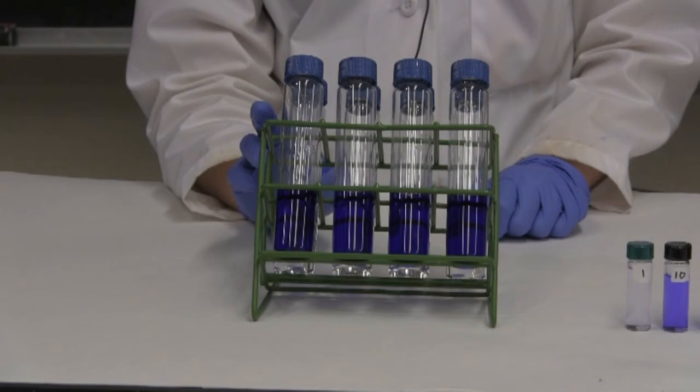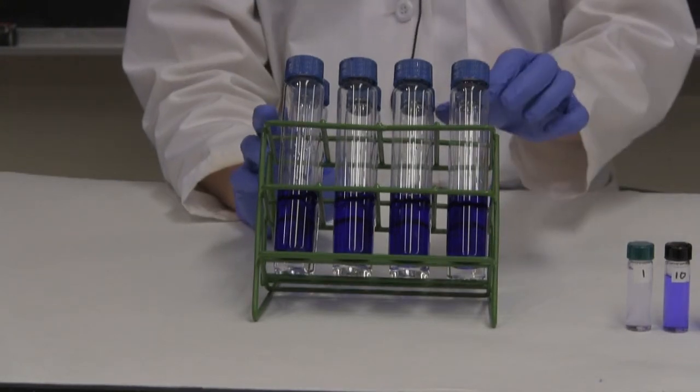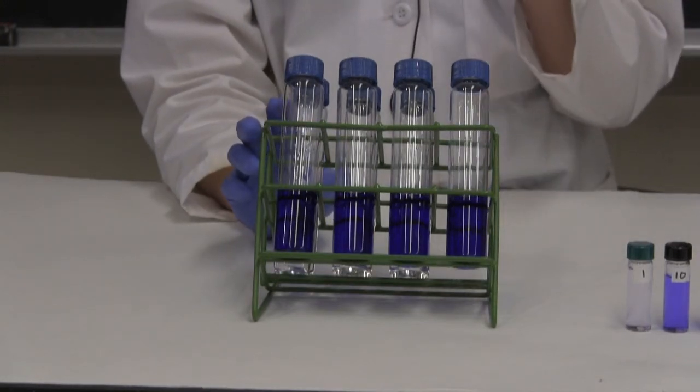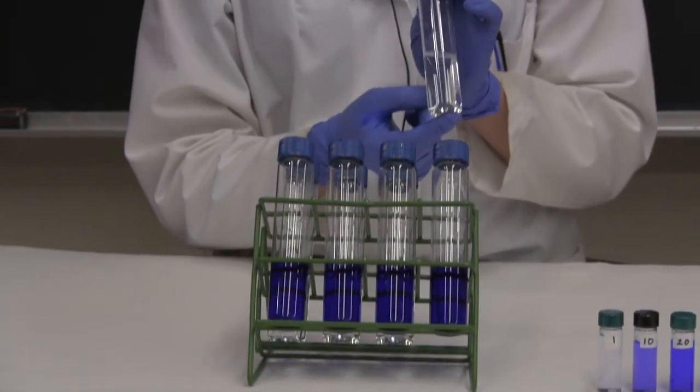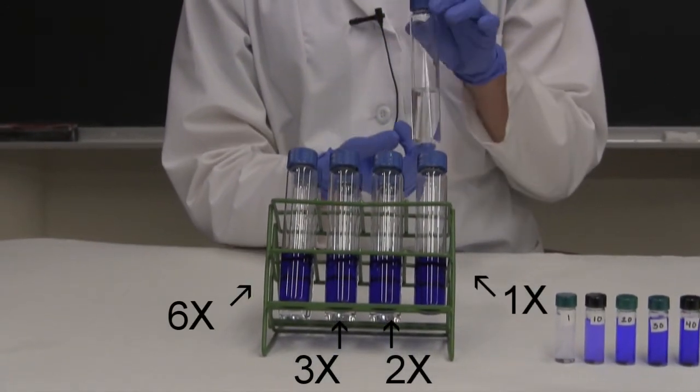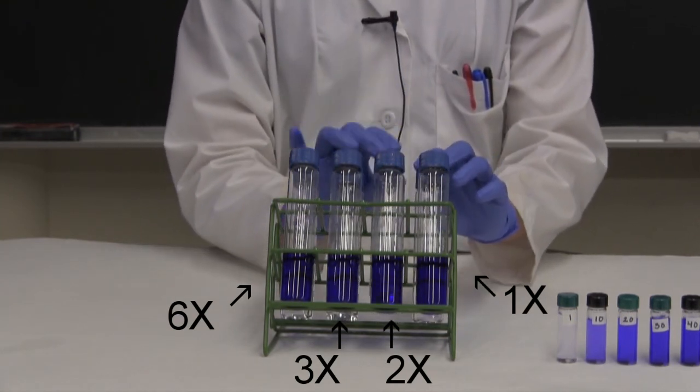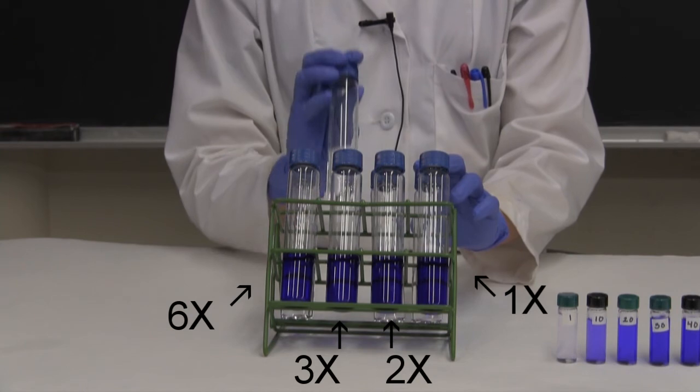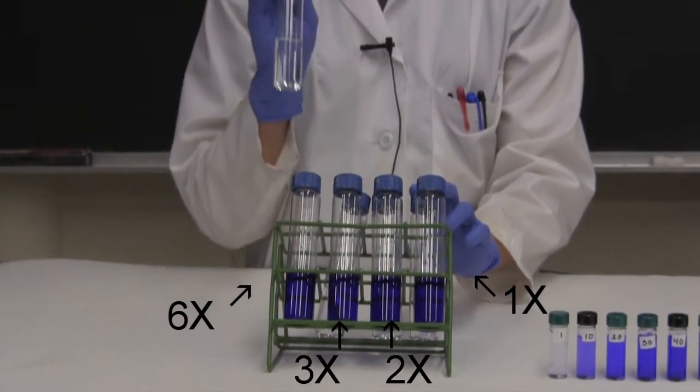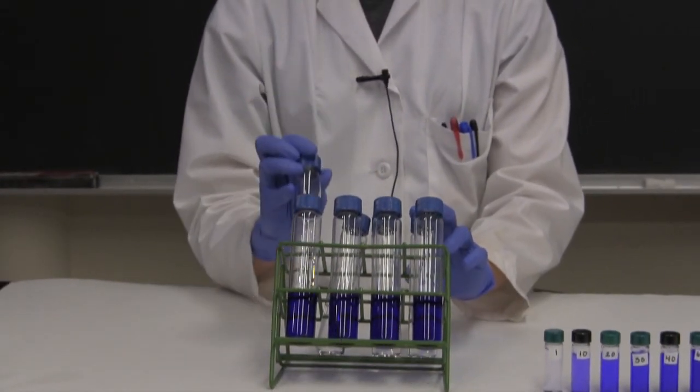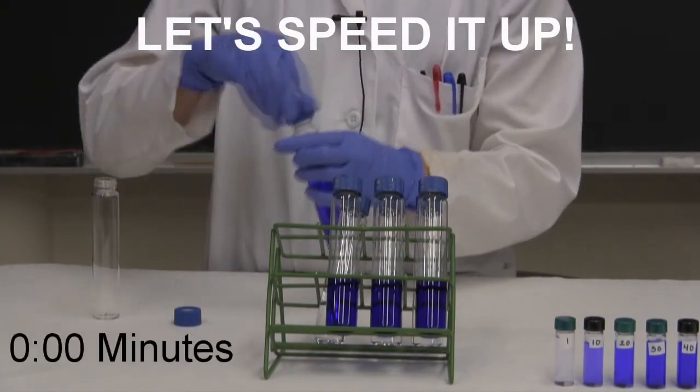Here we have four solutions. They all have the same amount of crystal violet in them, but we're going to vary the amount of hydroxide we put in them. So let's say the solution on the right has x amount of hydroxide. The next solution will have 2x. The next will have 3x. And the last solution, on the left, will have 6x. So now let's see how long it takes for the crystal violet to decolorize.